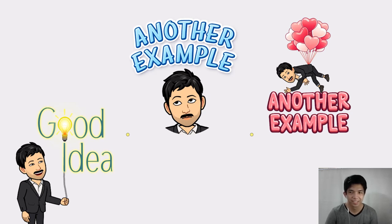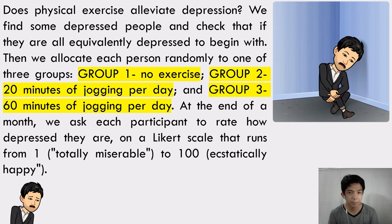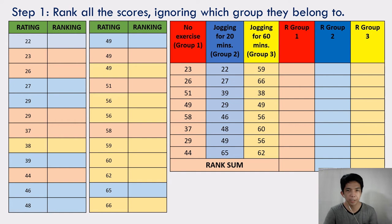Let's take another example. Does physical exercise alleviate depression? We find some depressed people and check that they are all equivalently depressed to begin with. Then we allocate each person randomly to one of 3 groups: Group 1 with no exercise, Group 2 with 20 minutes of jogging per day, and Group 3 with 60 minutes of jogging per day. At the end of a month, each participant rates how depressed they are on a Likert scale from 1 (totally miserable) to 100 (ecstatically happy). Step 1: Rank all the scores ignoring which group they belong to, arranging all ratings from lowest to highest.